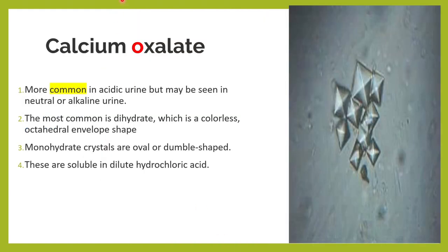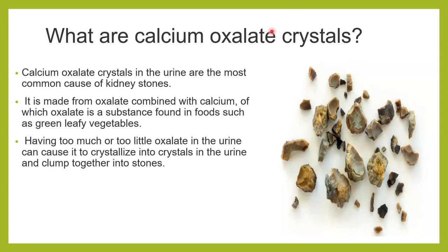So, calcium oxalate is the most common kind of crystal seen in urine. It is found in acidic urine, exists in monohydrate and dihydrate forms — dumbbell shaped and envelope shaped — and it is soluble when we add a little hydrochloric acid to the urine.